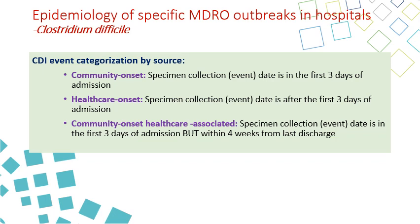Cases can also be categorized by timing of onset: community onset is diagnosed within the first three days of admission; healthcare onset is diagnosed from day four onwards. A third category — community onset healthcare-associated — applies when the patient tests positive within the first three days of admission but was hospitalized in the previous four weeks.